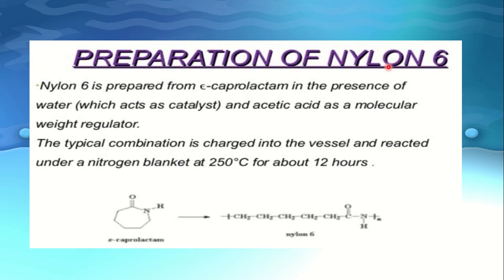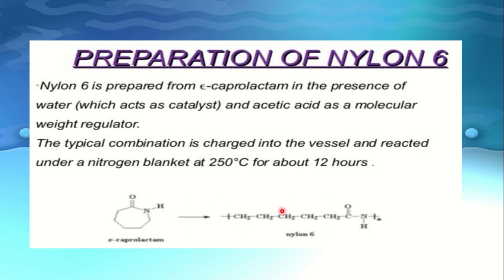Preparation of nylon 6: nylon 6 is prepared from ε-caprolactam in the presence of water, which acts as catalyst, and acetic acid as a molecular weight regulator. The typical combination is charged into the vessel and reacted under a nitrogen blanket at 250 degrees centigrade for about 12 hours. The formation of nylon 6 is shown here with the reaction.